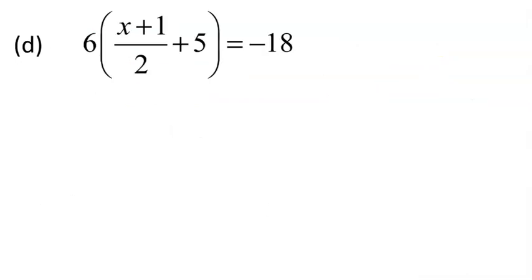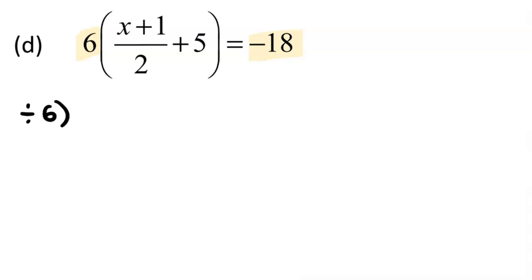This question looks similar in that we have a bracket with something added, but an important distinction: this plus 5 is inside the set of brackets, not outside like the last one, so it is attached to that 6. Noticing we've got 6 and negative 18, it would be sensible to divide both sides by 6. Doing that means we've gotten rid of the 6, leaving x plus one-half plus 5, without brackets, equals negative 18 divided by 6, which is negative 3.